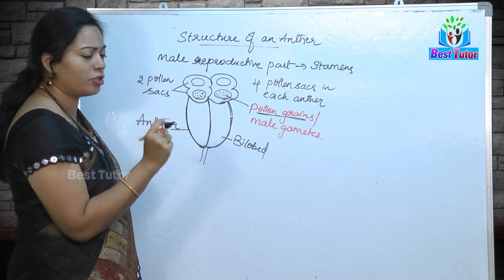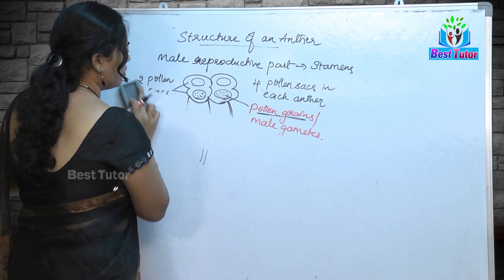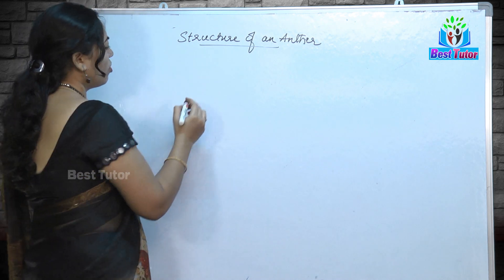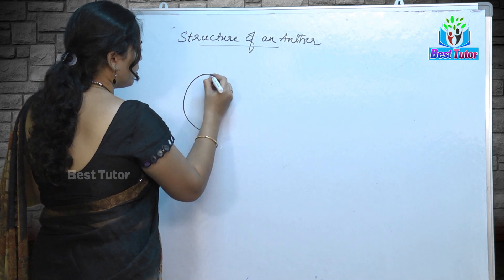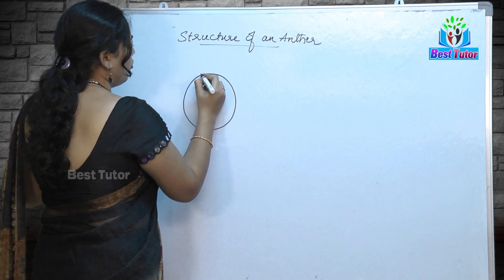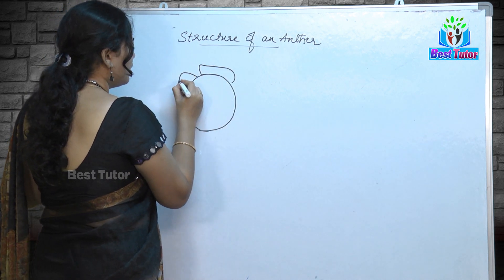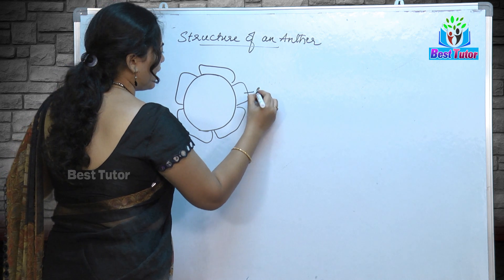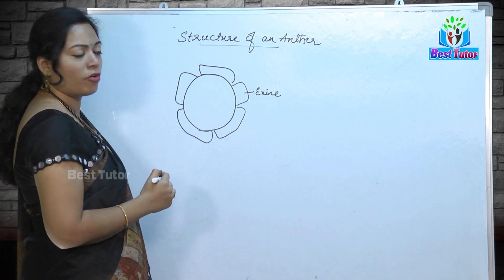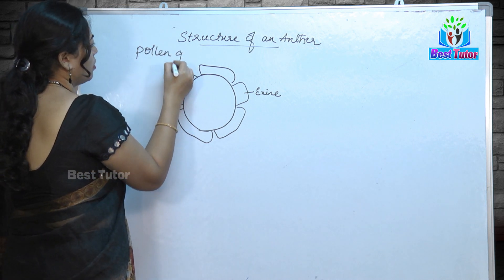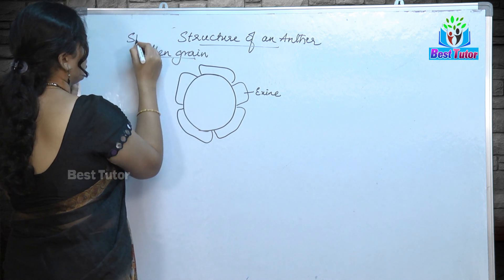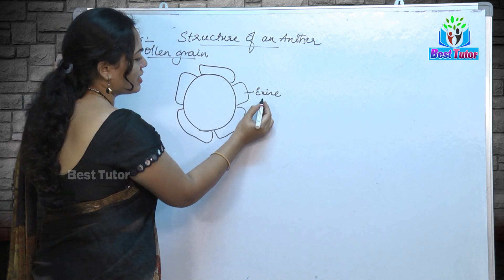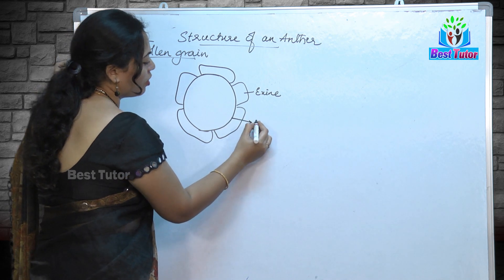Now let us examine the structure of the pollen grain. Pollen grains differ in different sizes and shapes — they are not all similar. Each pollen grain will have an outer covering membrane which we call the exine, and an inner covering known as the intine.